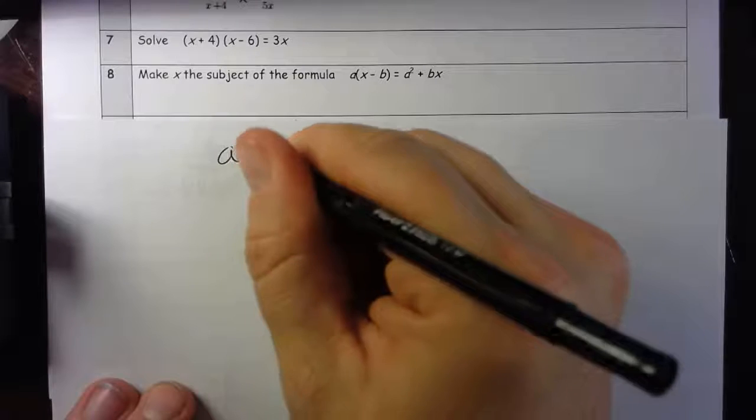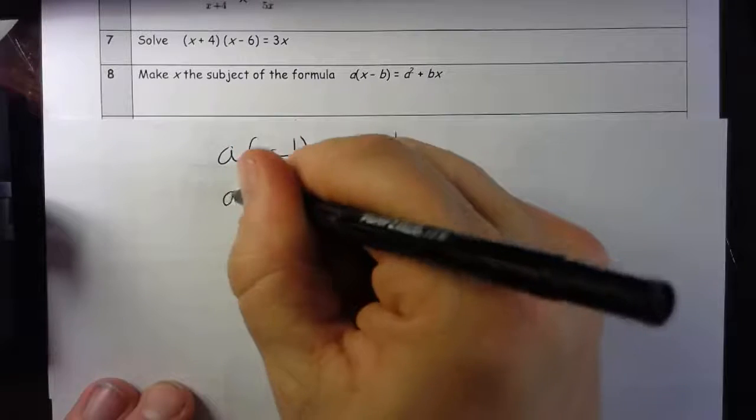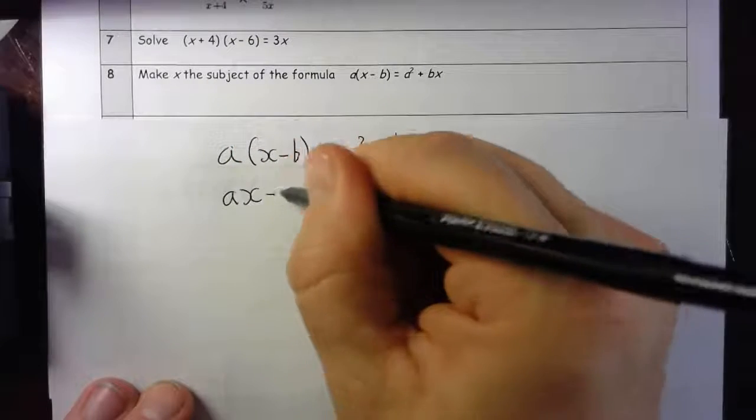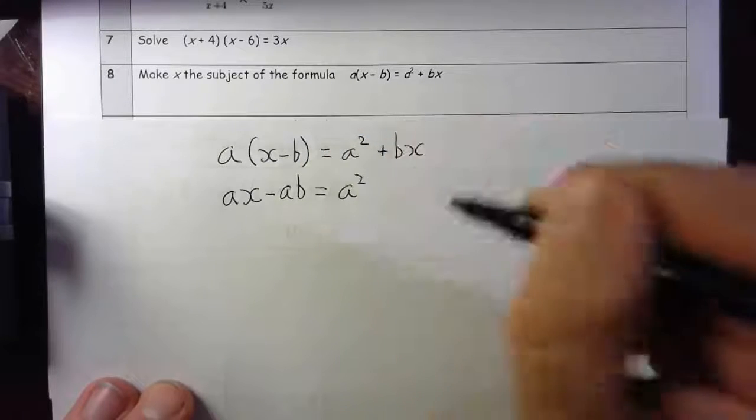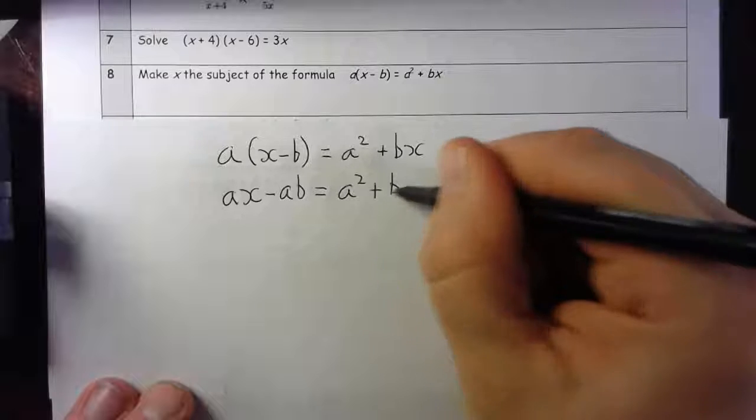So I'm going to just expand this bracket out. This gives me ax - ab equals a² + bx.